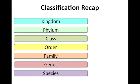Let's start with some classification revision. Every organism is put into different groups. It starts with the least specific — kingdom — and goes down to the species. The different kingdoms include plants, animals, fungi, protoctista, and prokaryotes.